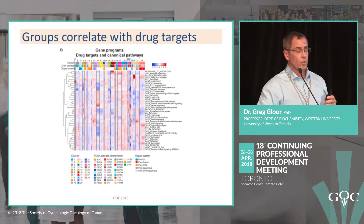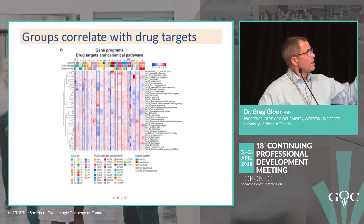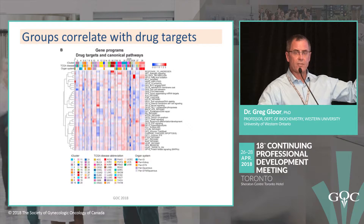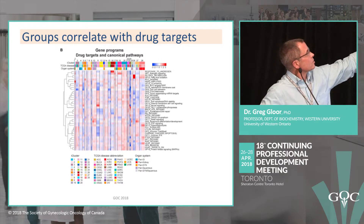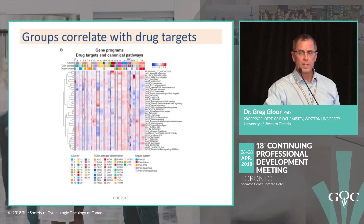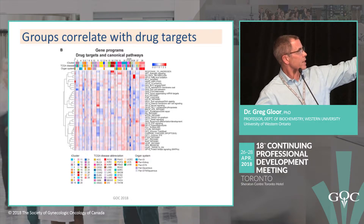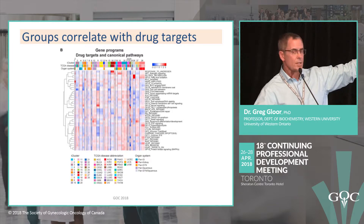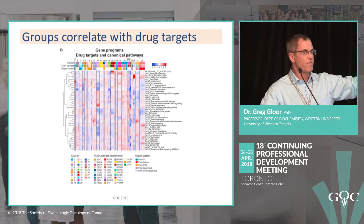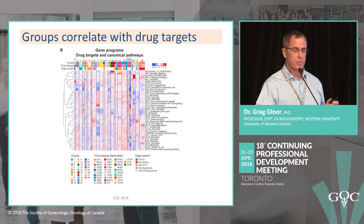What the groups do correlate with is drug targets. For example, cluster 16 is the prostate cancer cluster and is sensitive to androgen-blocking drugs. Cluster 19, the breast cancer group, is sensitive to estrogen-blocking drugs. So if you have a tumor and can phenotype it using these molecular diagnostics, you can identify what drugs might actually work — which is much more powerful than histopathology or immune subtype.